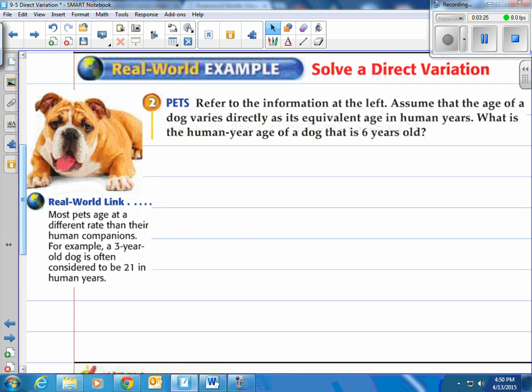Alright, solve a direct variation. Let's take a look at the dog here. Most pets age at a different rate than their human companions. For example, a three-year-old dog is often considered to be 21 in human years. You may have seen this or heard this. Refer to the information at the left. Assume that the age of a dog varies directly as its equivalent age in human years. What is the human year age of a dog that is six years old? Well we have to find that constant of variation. What's that magic number we're looking for?